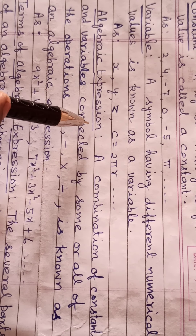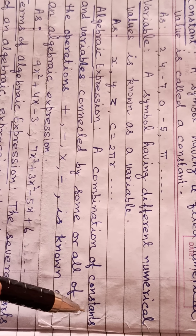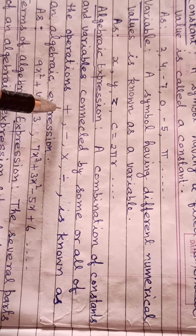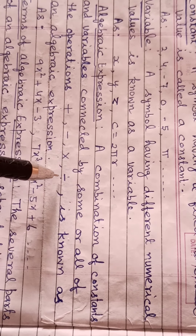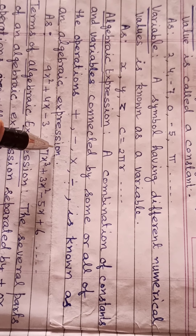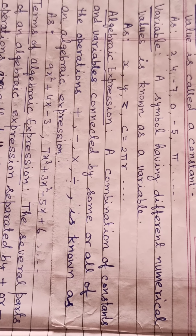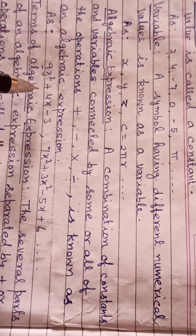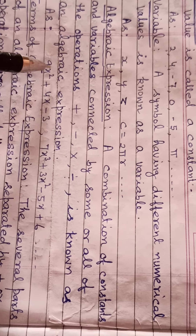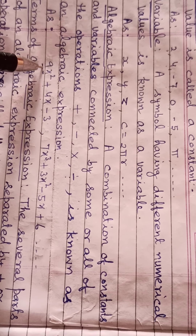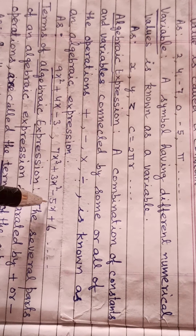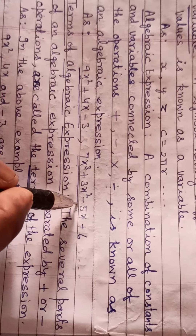Now, algebraic expression. A combination of constants and variables connected by some or all of the operations — plus, minus, multiply and divide — is known as an algebraic expression. For example, 9x squared plus 4x minus 3, and 7x cubed plus 3x squared minus 5x plus 6. All together these are called algebraic expressions.